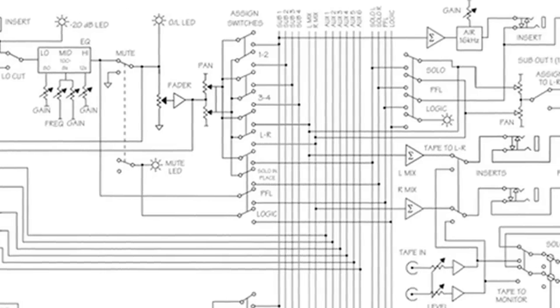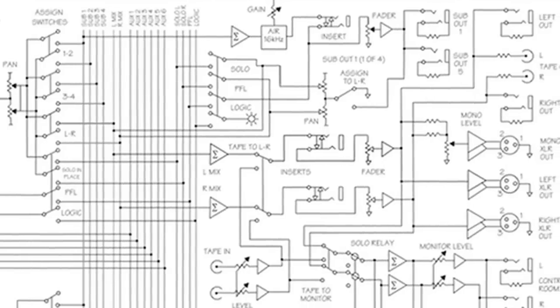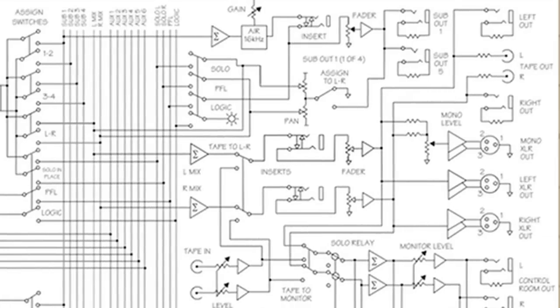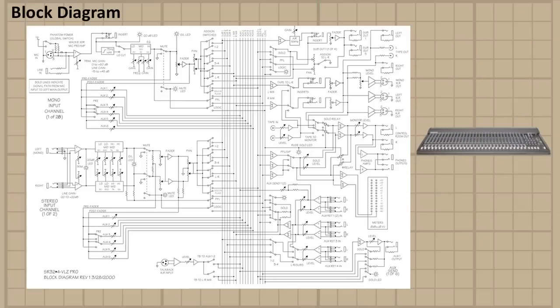And then you've got your routing section. So this is where you can assign a specific channel to a sub mix, sub 1 and 2, sub 3 and 4, or the master left and right bus. And when we talk about signal routing, we are talking about buses. So a bus is any place within a soundboard that signal can be routed and summed together and combined with other signals. This is where the magic happens. This is where signals actually get summed together.